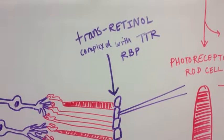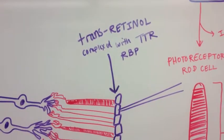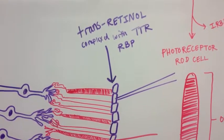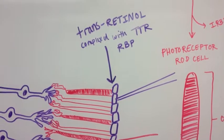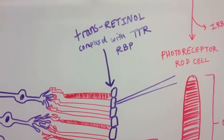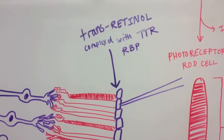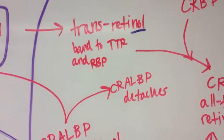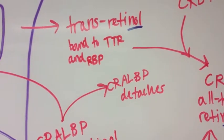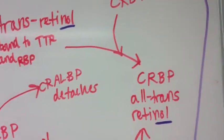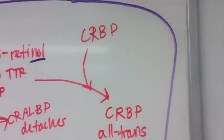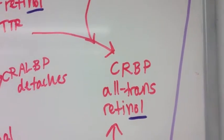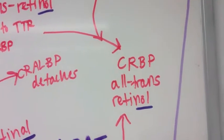In the endothelial membrane, vitamin A in the form of transretinol enters endothelial cells complexed with transthyretin and retinol-binding protein. Transretinol bound to transthyretin and RBP combines with CRBP to form all transretinol in the endothelial cell of the eye.